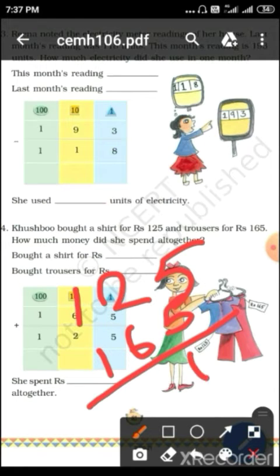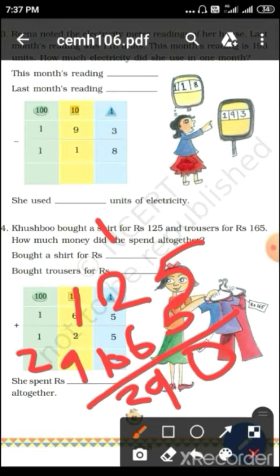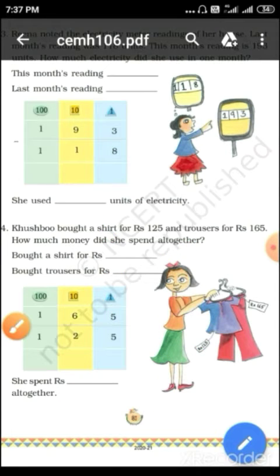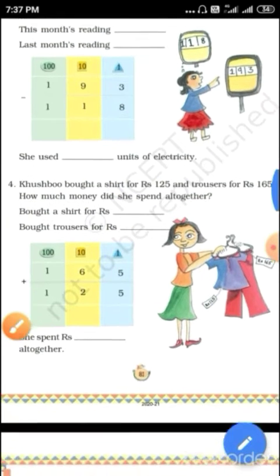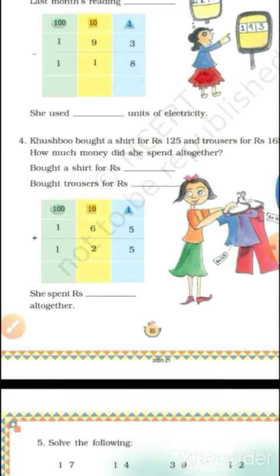Now we add 125 plus 165. Ones: 5 plus 5 is 10, write 0 carry 1. Tens: 2 plus 6 plus 1 is 9. Hundreds: 1 plus 1 is 2. So the total is 290 rupees. Khusbu spent rupees 290 altogether.